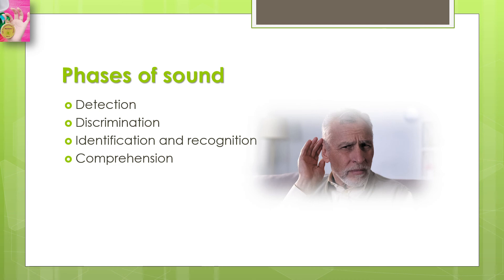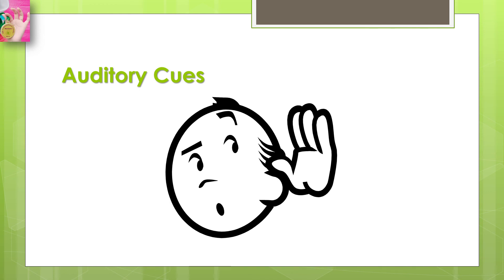In comprehension, we interpret what we hear. To do a quick revision of the phases: in detection we detect a sound; in discrimination we discriminate it from other sounds; in identification and recognition we identify and recognize it; and in comprehension we interpret it. Now let's talk about auditory cues. Auditory cues play an important role in auditory perception. We use auditory information to judge distance and direction, just as we use information from both eyes to perceive the distance of an object.